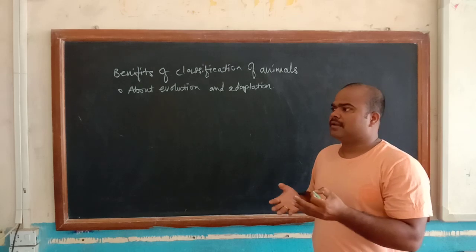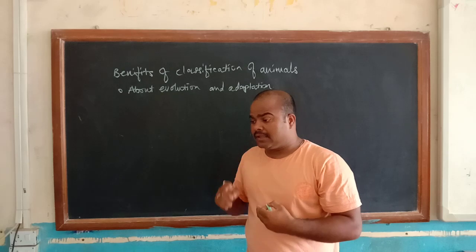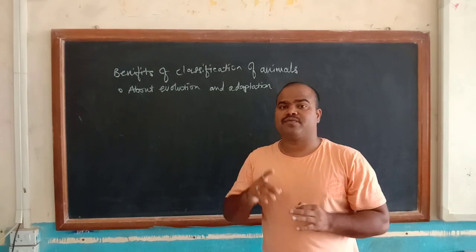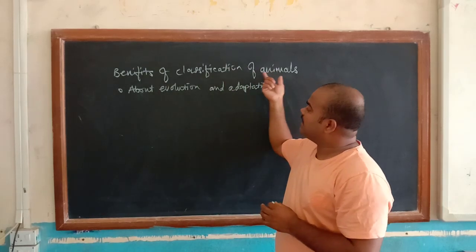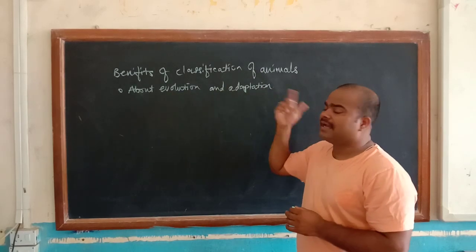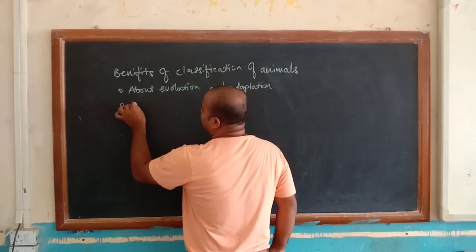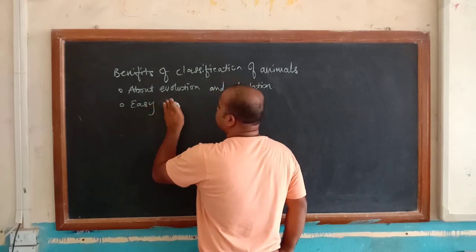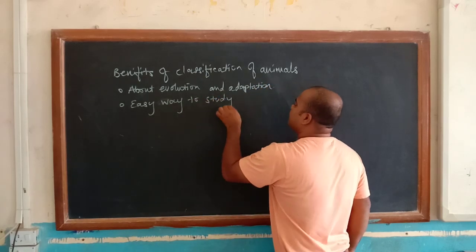When we observe our genus or grouping — for example, human beings are mammals — all mammals have a different look but they come from a single ancestor. That means classification of animals provides information about evolution along with adaptation. The second benefit is that it provides an easy way to study animals.